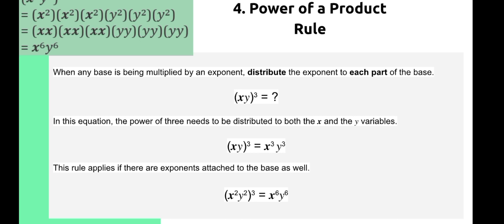Fourth is the power of a product rule. When any base is being multiplied by exponents, we distribute the exponent to each part of the base. For example, (xy) raised to the power of 3: the power of 3 needs to be distributed to both bases x and y, giving us x raised to the power of 3 times y raised to the power of 3. These rules also apply if there are exponents attached to the base. If x and y inside the parenthesis each have an exponent of 2, we multiply them: 2 times 3 equals 6, giving us x raised to the power of 6 times y raised to the power of 6.